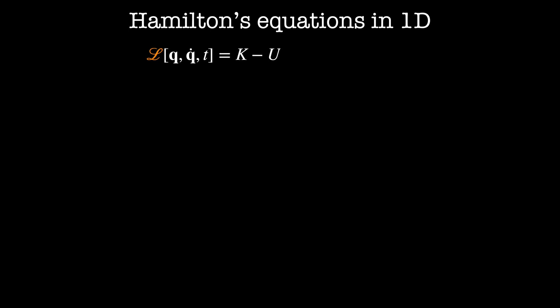Since the Hamiltonian depends only on Q and P, we'll want a way to express the Lagrangian in terms of Q and P. We'll start with the Lagrangian written in terms of Q, Q dot, and t, which is equal to the kinetic energy minus the potential energy. A general Lagrangian can be written as one-half some function A of Q times Q dot squared minus U of Q.